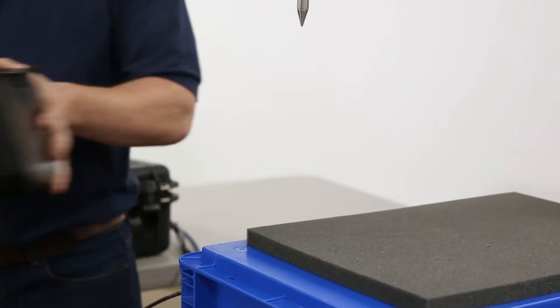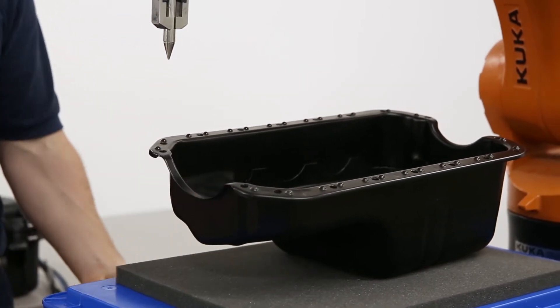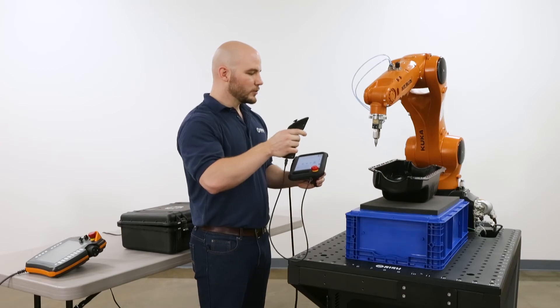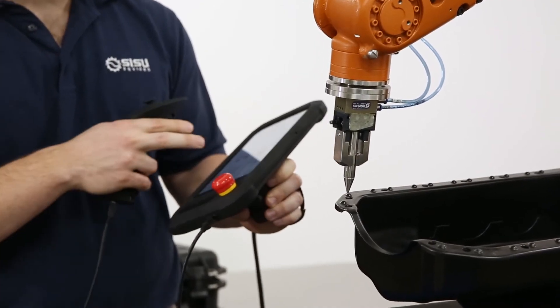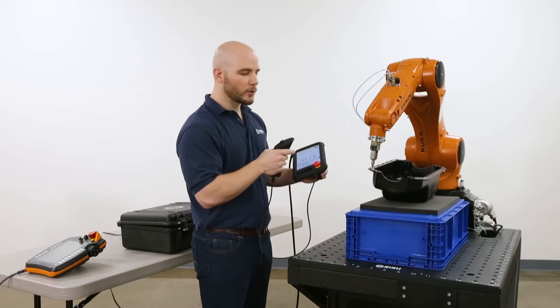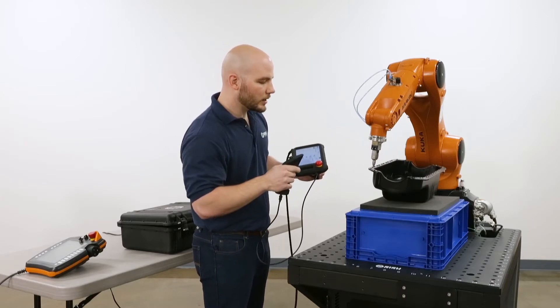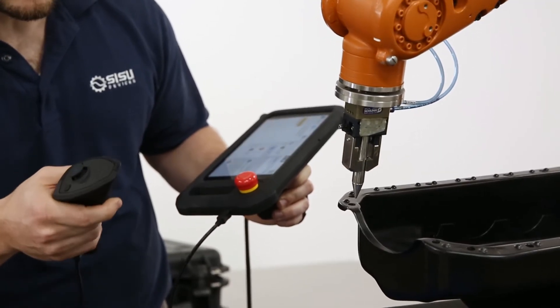Let's pretend that I'm dispensing gasket material along the front side of this oil pan. It's a complex surface at a strange angle. Just move the end effector to the desired position and press a button on the controller or the pendant to save the point.